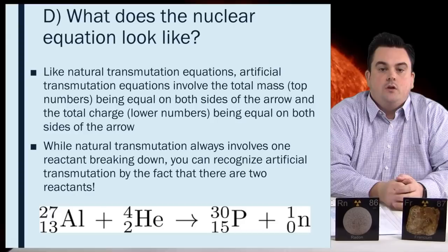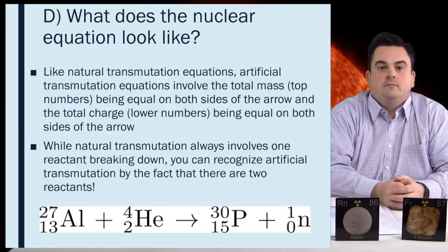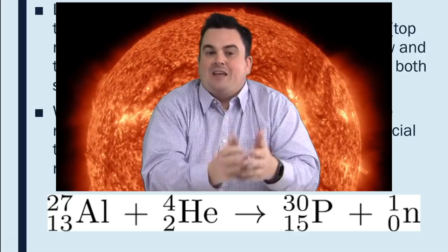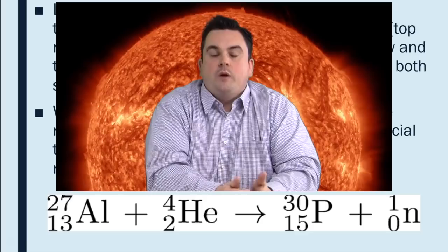So, down below we have an example of an artificial transmutation. We can tell that it's artificial transmutation because if you look closely on the left side of the arrow, we have two reactants. We have aluminum plus an alpha particle. Now, this gives us phosphorus, which is a new element, and more particles, in this case, a neutron.